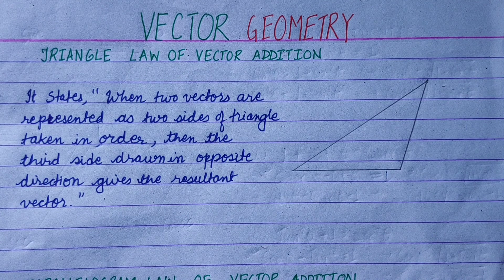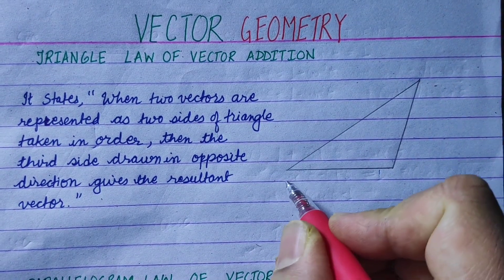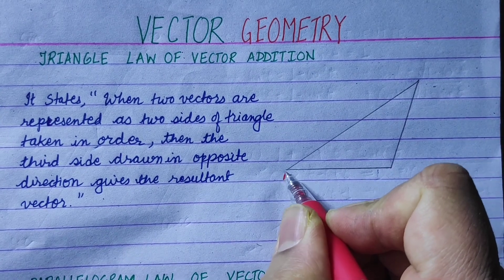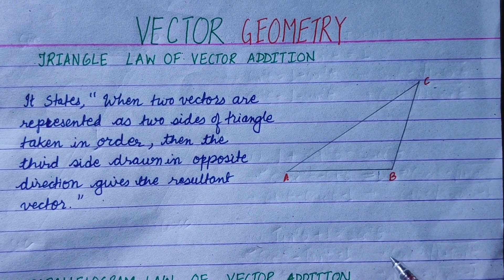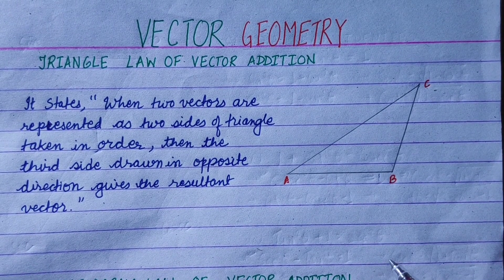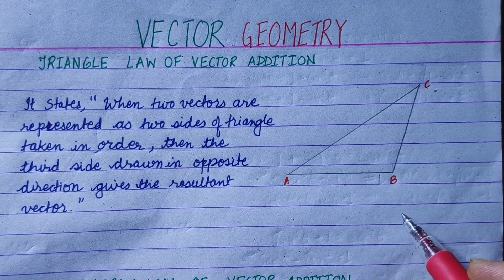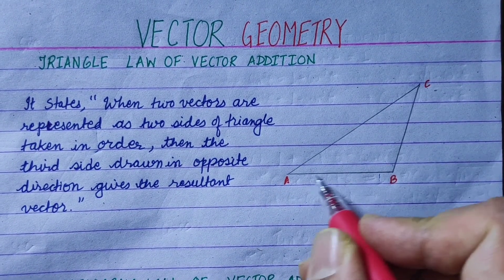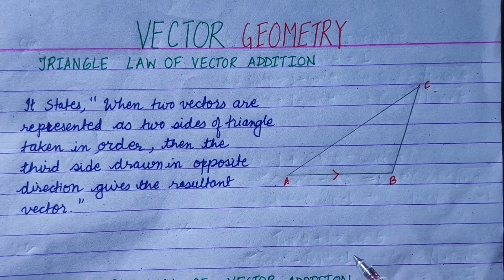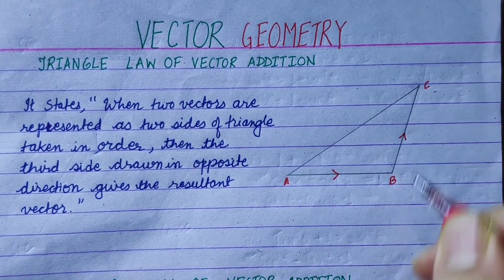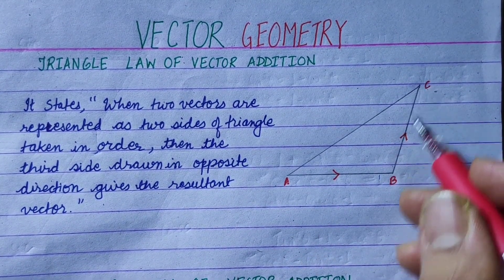Triangle law of vector addition — what does this mean? If we have two vectors, the triangle has continuous sides. So ABC is a triangle. The two vectors are AB and BC — these are two continuous sides of the triangle.